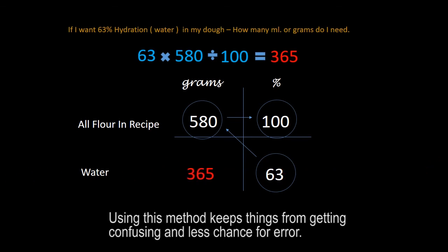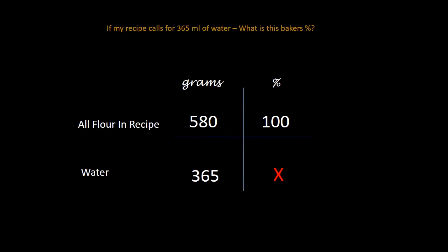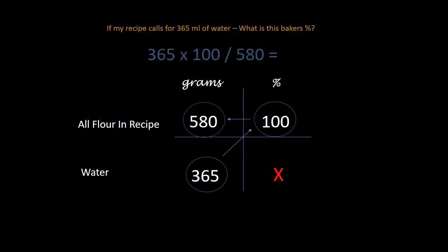This can be used for all the ingredients — just swap out water with a sugar percentage, a salt percentage, or anything. It works exactly the same. Now if we already know our water amount and want to express it as a percentage, it's the same method: 365 times 100 divided by 580, which gives us 62.93 — or 63 percent water. The beauty of using this layout is that it's easy to follow and you don't get confused. The ratio and proportion square works absolutely great — excellent way to keep organized with less chance for mistake.